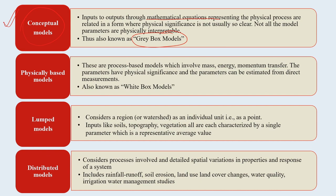Physically based models are process-based models involving mass, energy, and momentum transfer continuously happening in our ecosystem. The parameters have physical significance and they can be estimated from direct measurement - that is important. Parameters used for physically based models can be directly measured, so they are known as white box models. To summarize: black box model under empirical, gray box model under conceptual, and white box model under physically based models - these are popular terms in the modeling and simulation community.